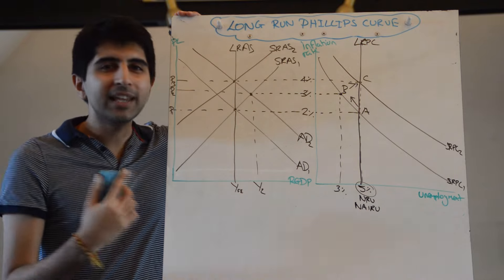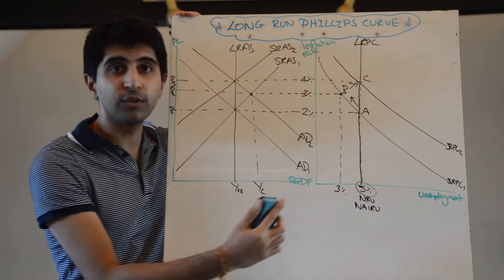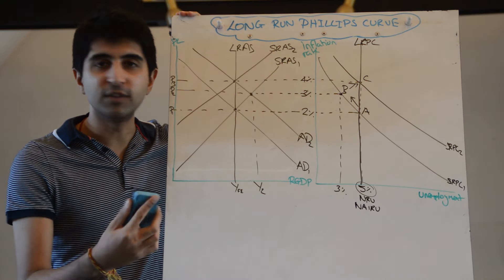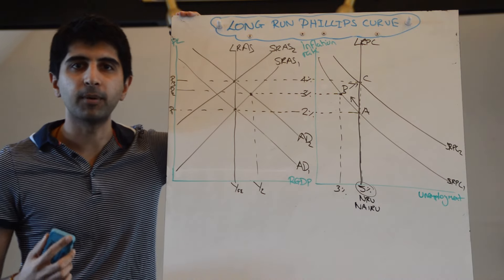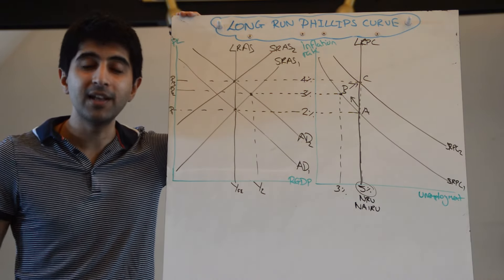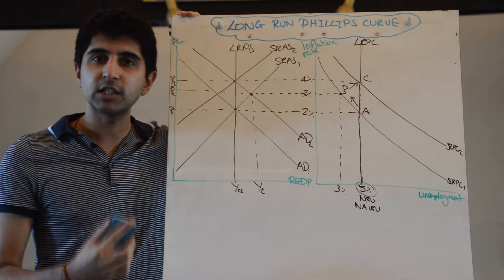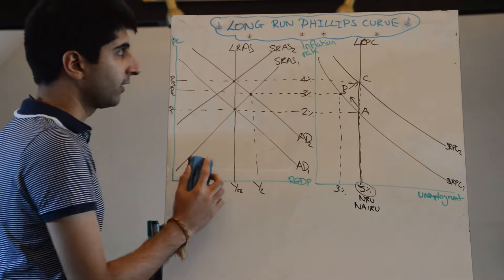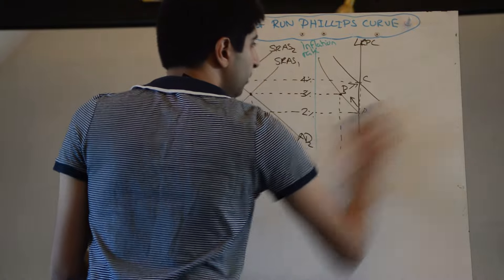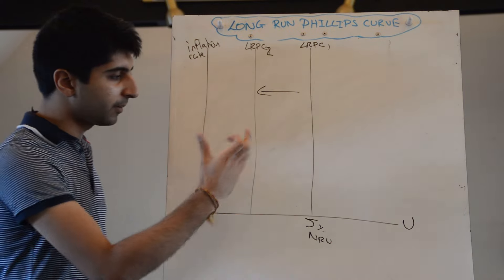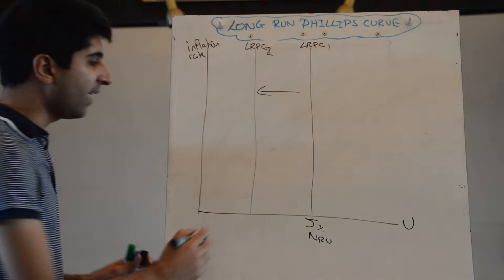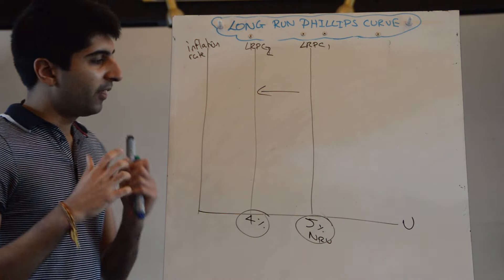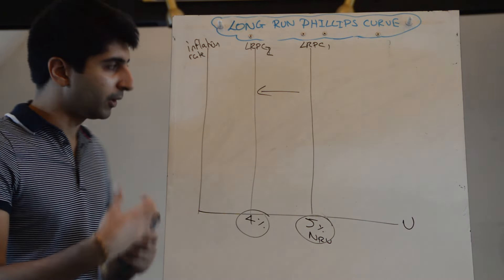The same conclusions can be formed: increasing aggregate demand is not a way to increase growth in the long term, just as classical economists would argue. We don't need increases in AD in the long term to increase growth or to reduce unemployment. What we need is supply-side policies — that's the only way in the long term to reduce the natural rate of unemployment, to see an increase in growth and a reduction in unemployment with lower rates of inflation. On a Phillips Curve, that would shift the long-run Phillips Curve to the left, reducing the natural rate of unemployment, maybe from 5% to 4%.